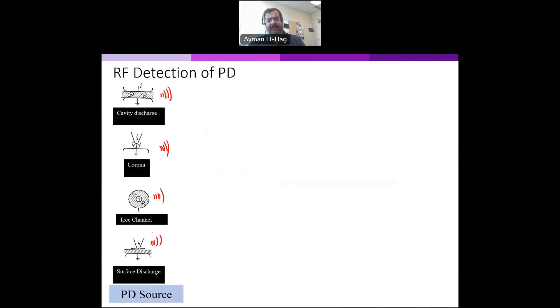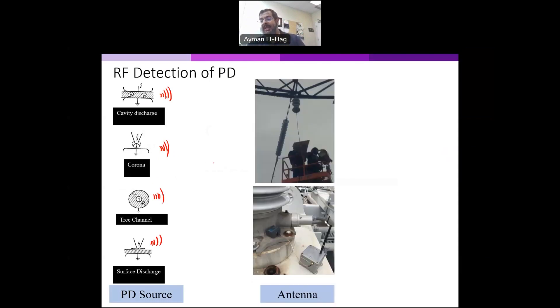It depends if the partial discharge is internal or external. Of course, there will be some different forms and values or quantities of attenuation for this RF or electromagnetic waves. Now if we have an antenna, this antenna could be for outdoor insulation systems like this one, or if we insert it inside the device like a transformer or GIS, then it can detect this emitted electromagnetic waves.